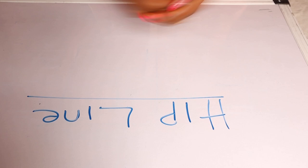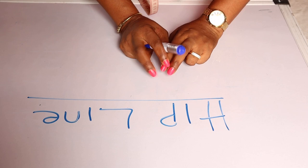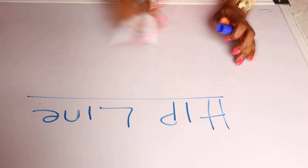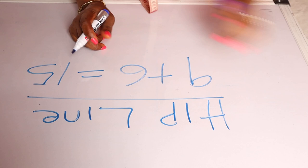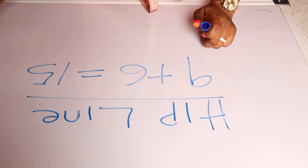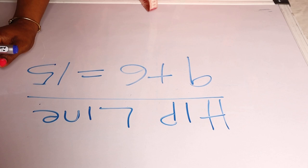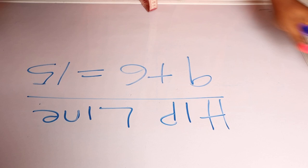Moving on to the hip line: how do you get the hip line measurement? It is very simple — just add six inches to the body's length. For mine, the body's length is nine, plus six, so the hip line is 15 inches. From the shoulder to the hip line is 15 inches. This is important if you're making a shirt or pants for a baby.